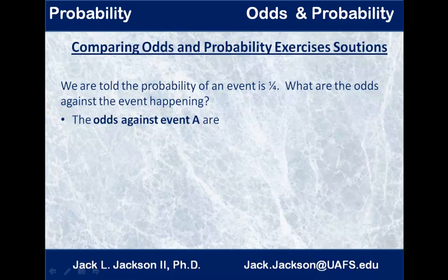So, here we knew the odds, and we wanted to find the probability. Now, let's look at an example that goes the other direction. This time, we know the probability, and we want to find the odds. We're told the probability of the event is 1 fourth. What are the odds against the event happening? Once again, work this one, and then come back and check it. Press pause now.